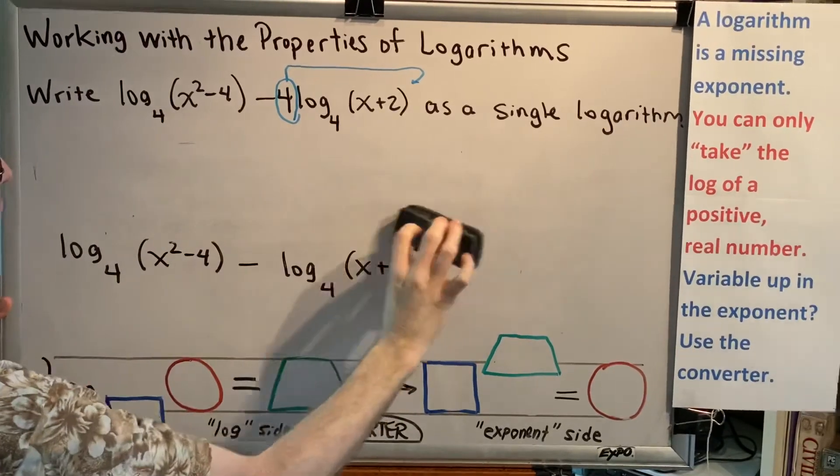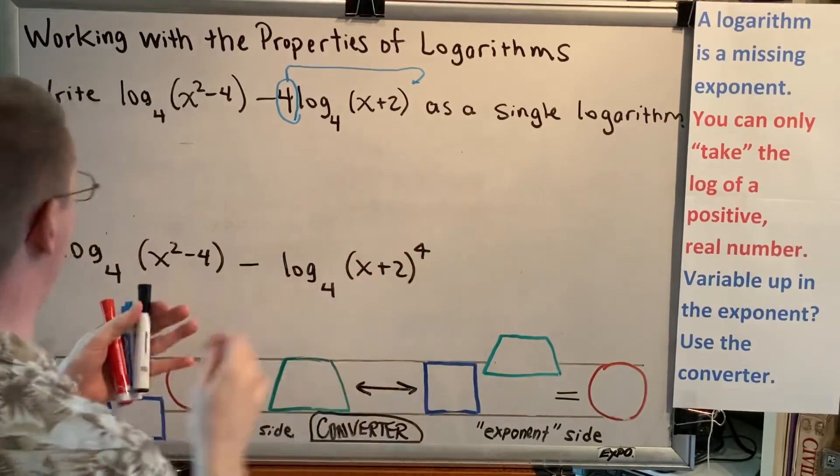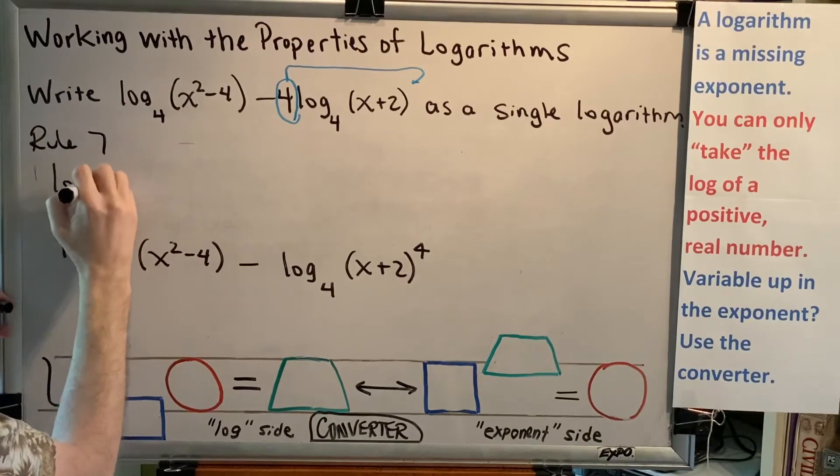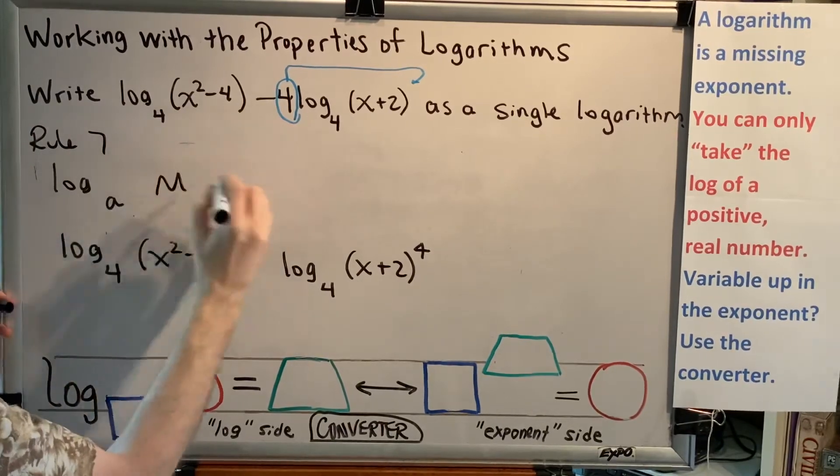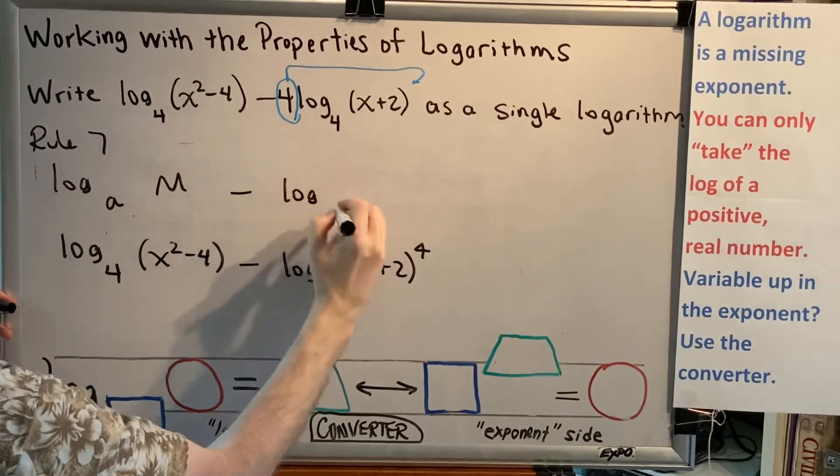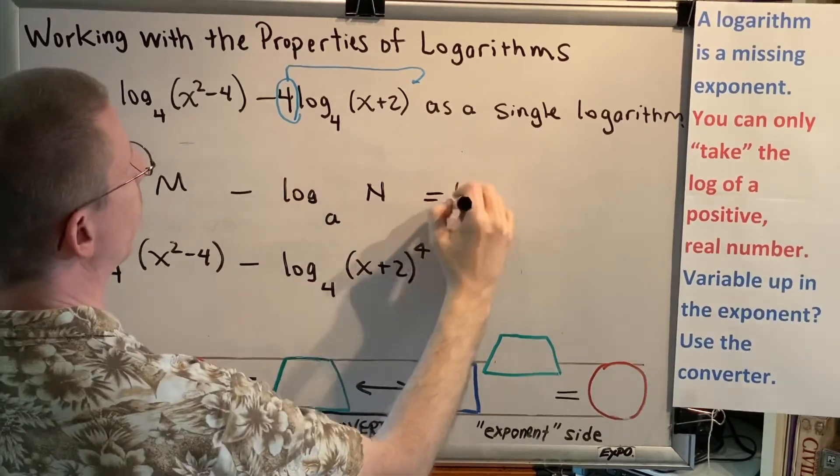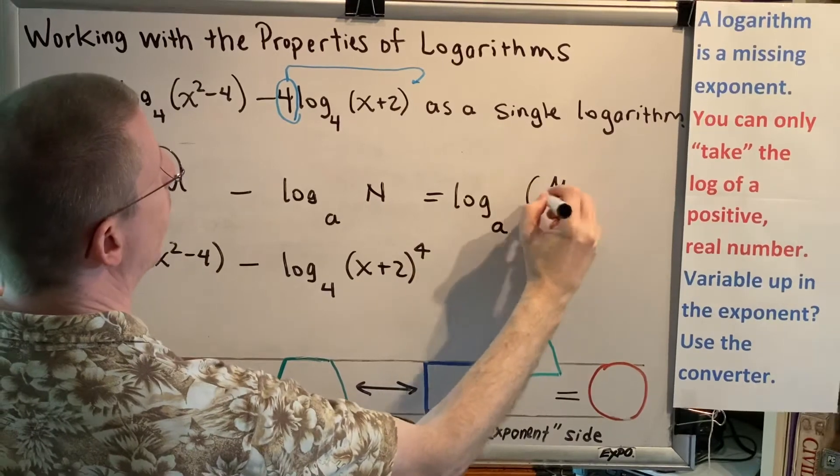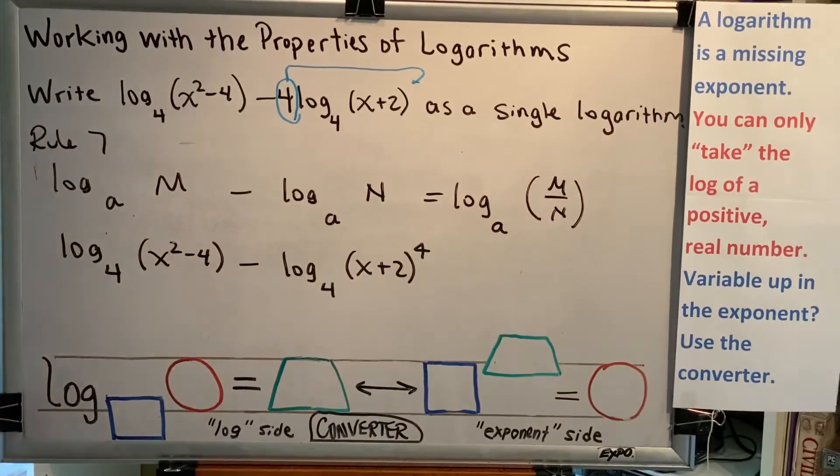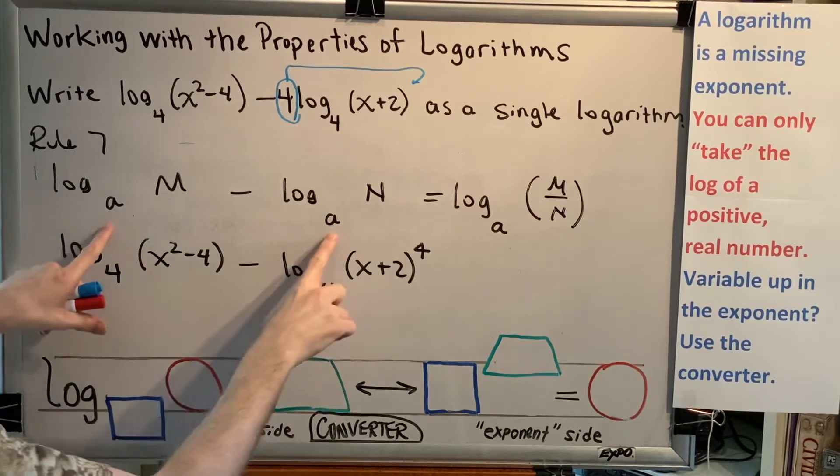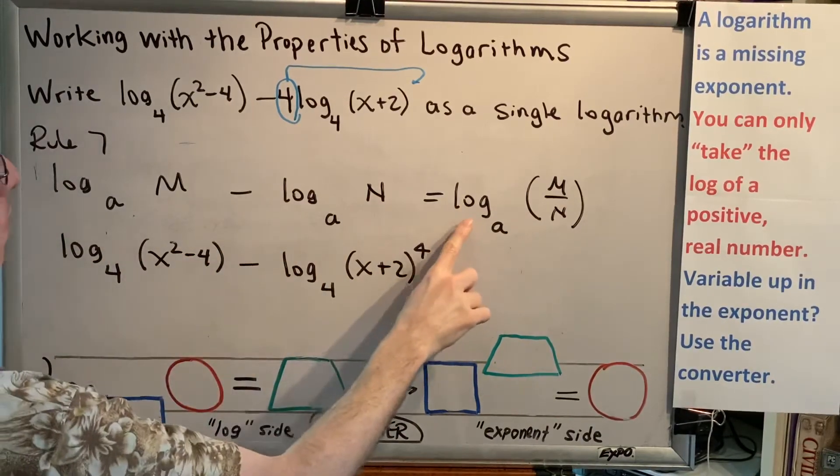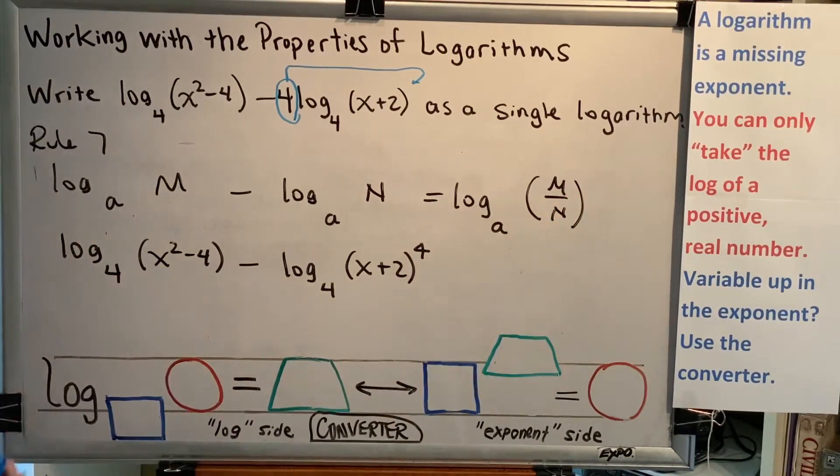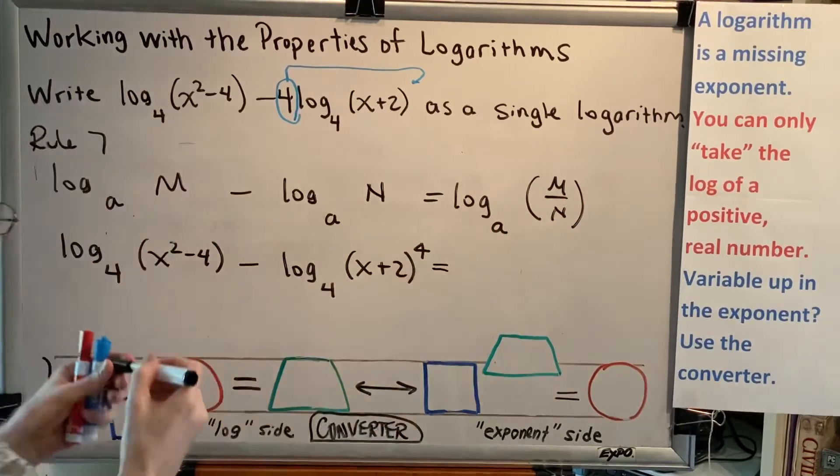Okay, now that we've used Rule 9 and we've gotten that pesky 4 out of our way, now we can go ahead and use Rule 7 as previously stated. Let's write Rule 7 one more time. Log base a of m minus log base a of n equals log base a of the quotient m over n. Said another way, when two logs with the same base are being subtracted, you can combine them into one log using that base; you just have to divide the two arguments. So that's what we'll do in this particular problem.